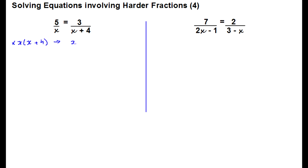So x times x plus 4 times 5 over x equals 3 lots of x times x plus 4 all over x plus 4. And we can see that the x plus 4 on the top on the right-hand side cancels with the x plus 4 on the bottom of the right-hand side. And on the left-hand side, the bottom x cancels with the top x. And we're left with 5 into x plus 4 is equal to 3x.